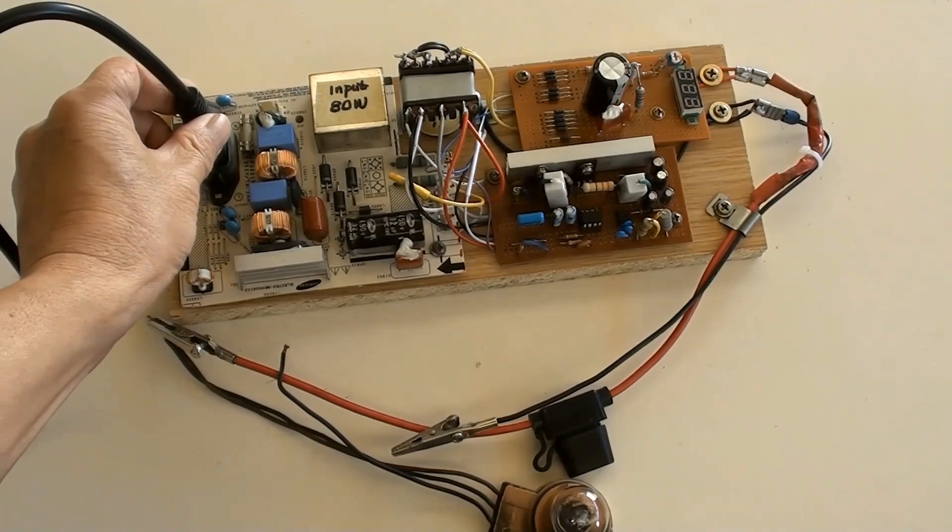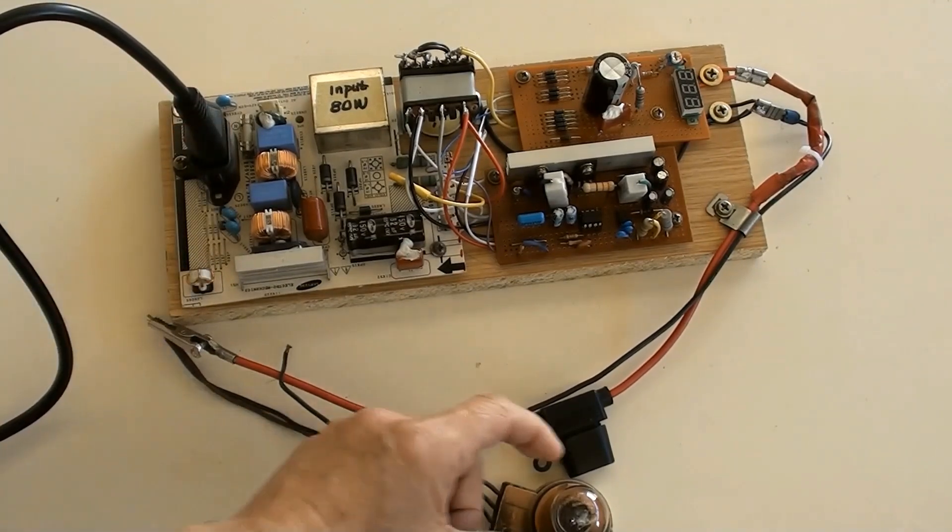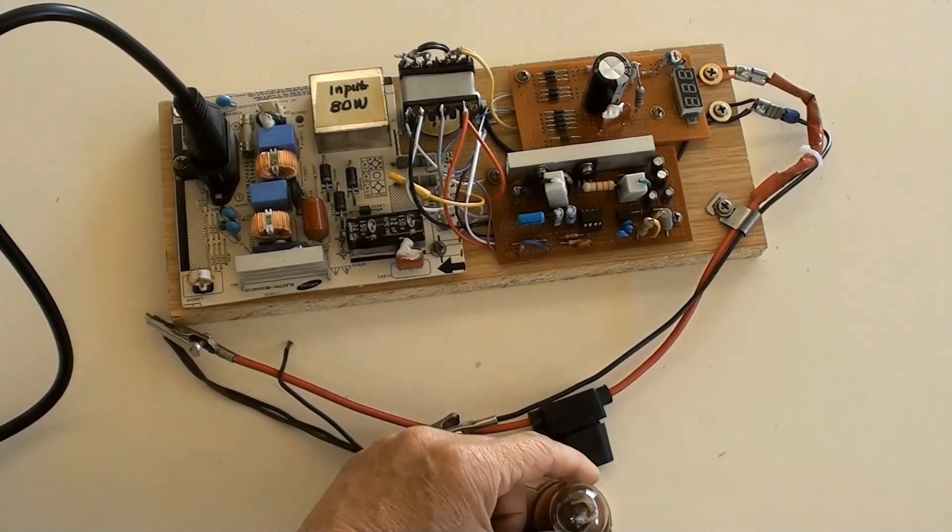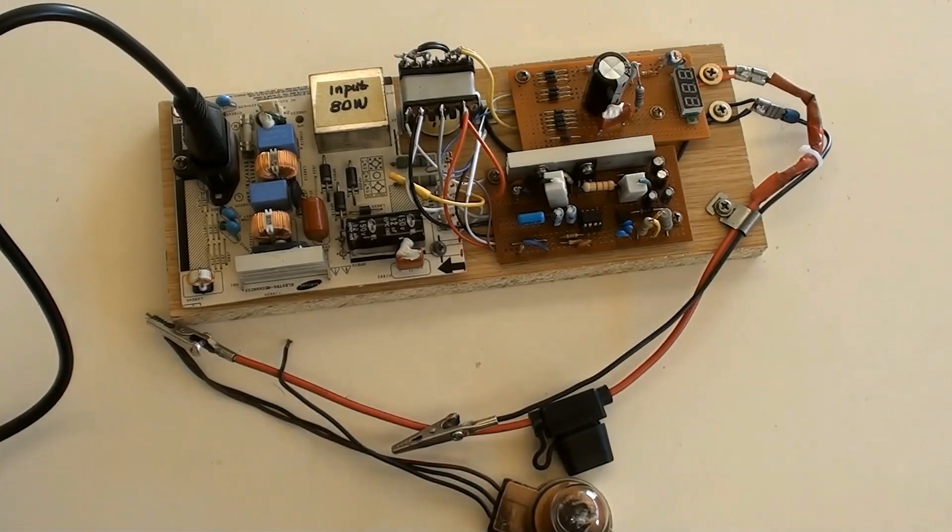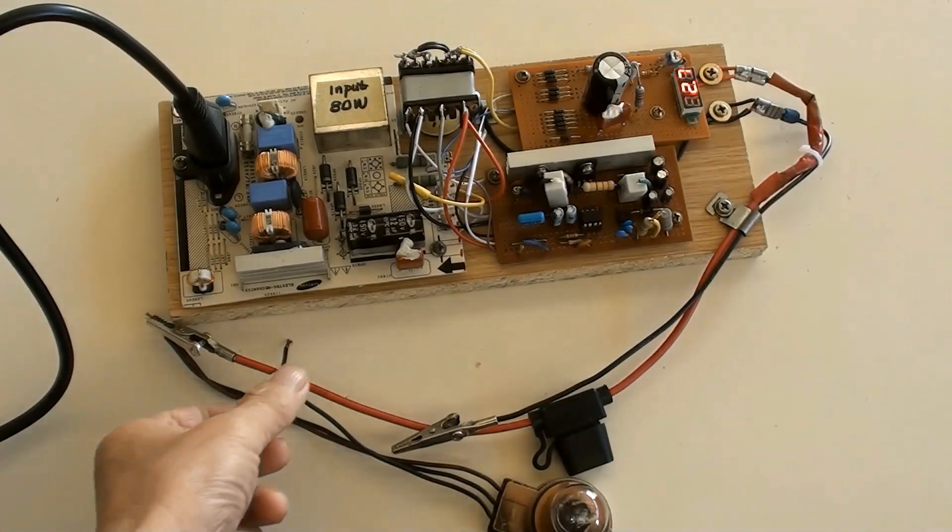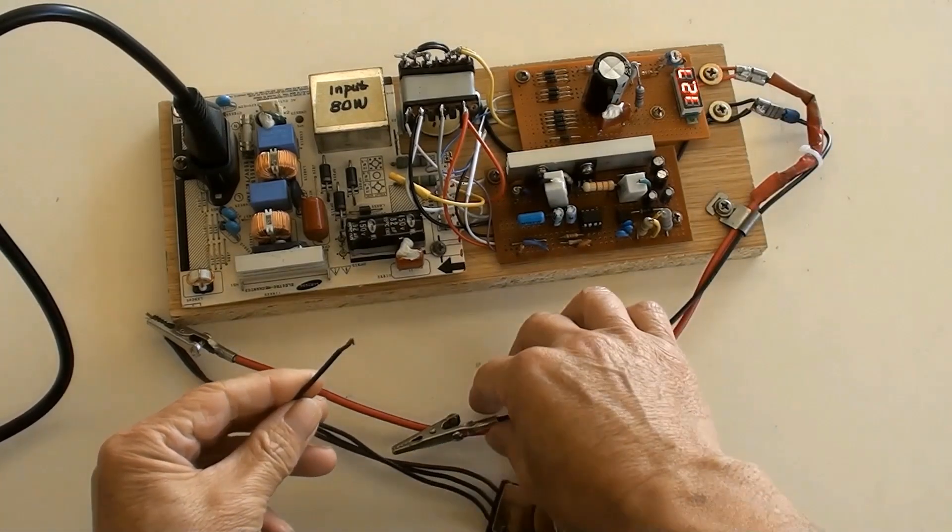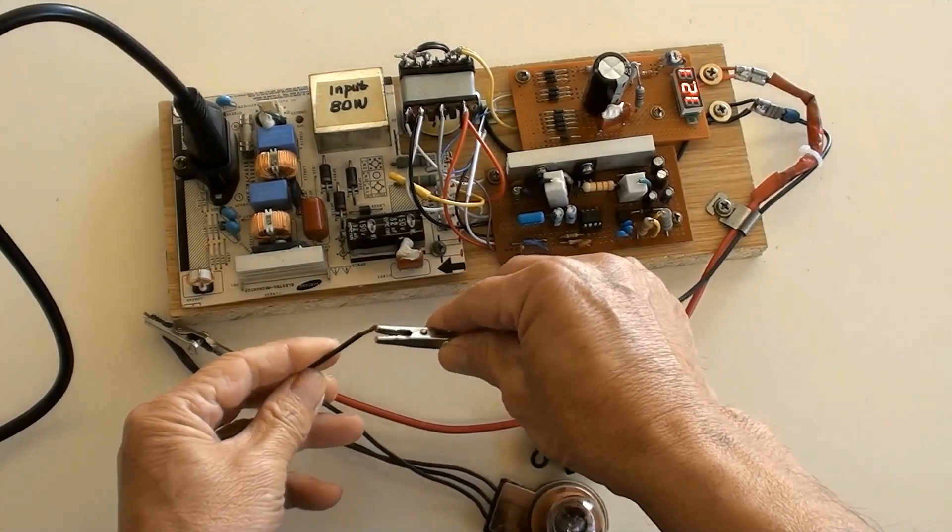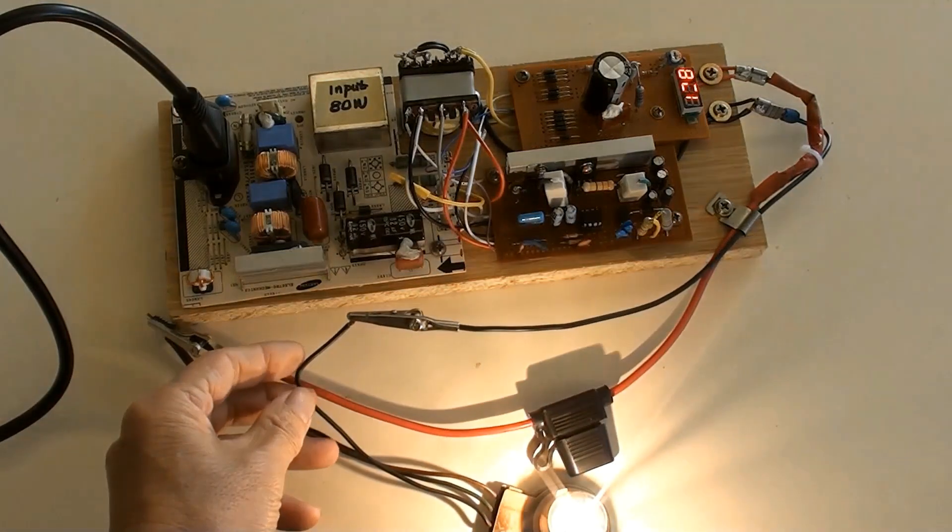The power cord has been connected input socket. An output load is a DC 12 volt and 26 watt globe. Switched power on. The output of 12.7 volt indicated. Connecting the globe now. And working very well.